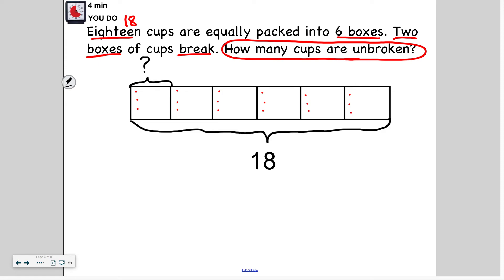But it said that two of those boxes broke, so I can't count these six cups here - one, two, three, four, five, six. So how many are left? How many cups are still usable or not broken? Well, there's three, six, nine, twelve. So the answer is there are 12 unbroken cups.